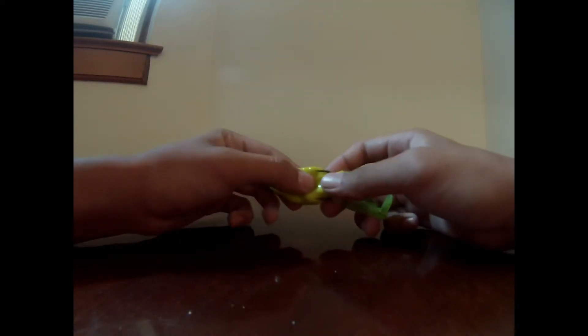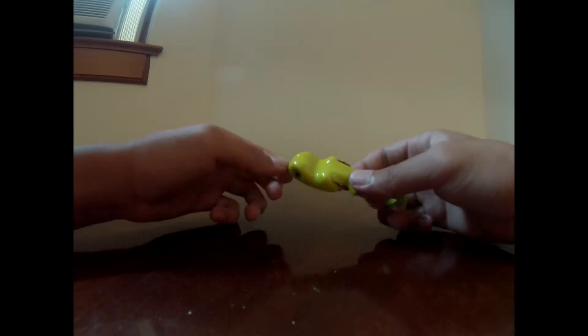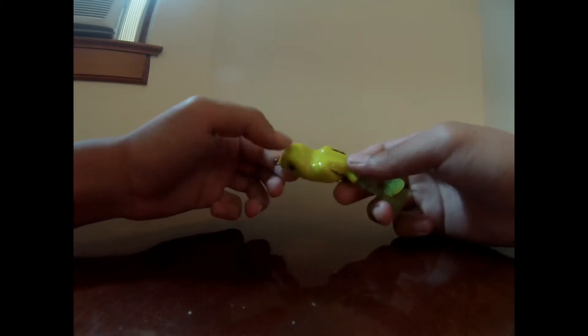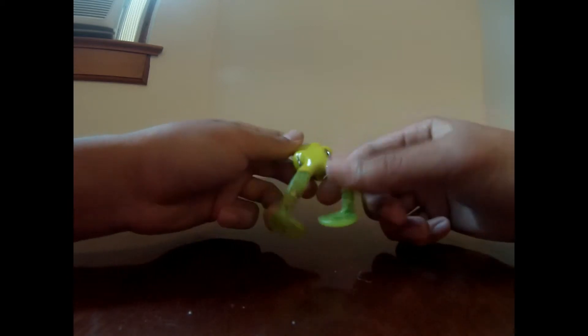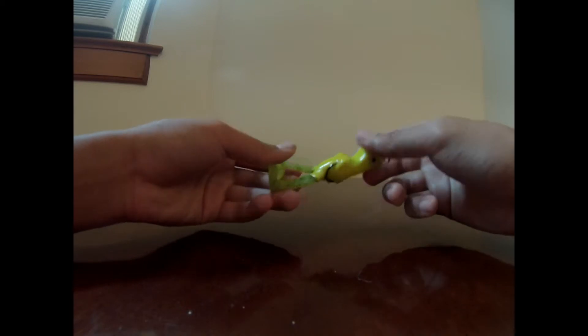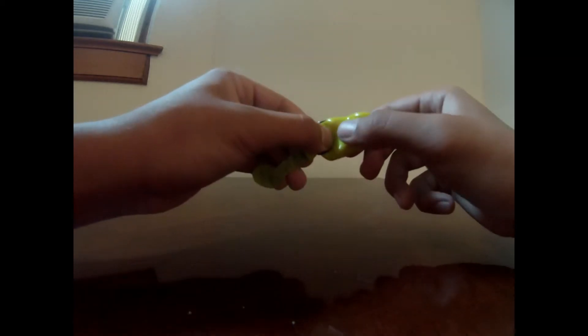My second to first favorite lure is the Scum Frog, the Bigfoot Scum Frog by Booyah Baits. It's got this little paddle tail action so when you retrieve it across the water it makes a little wake behind it. And the fish, the bass just love it.